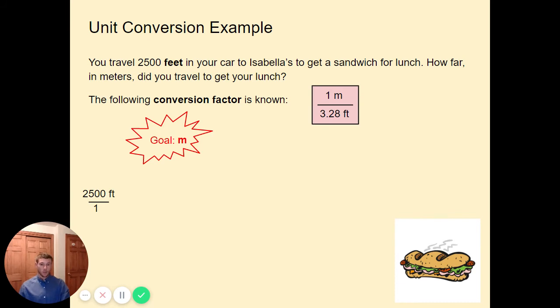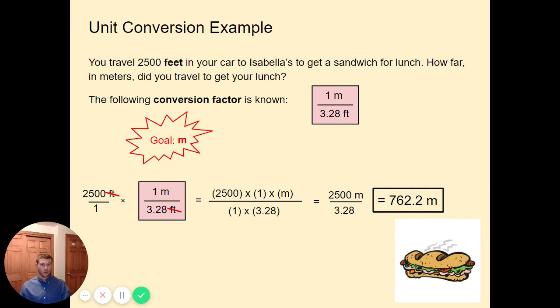Our conversion factor here is between feet and meters. I didn't know this off the top of my head, but I googled it and found that 1 meter is equal to 3.28 feet. The key there is that they're equal once again. So now we multiply our initial value times that conversion factor. We can cross cancel the feet here to get rid of them and we're left with meters. So we use our multiplication here. We have 2,500 times 1 times m over 1 times 3.28. We have to do 2,500 times meters over 3.28.